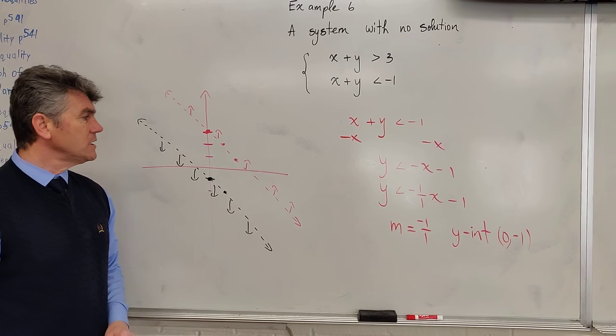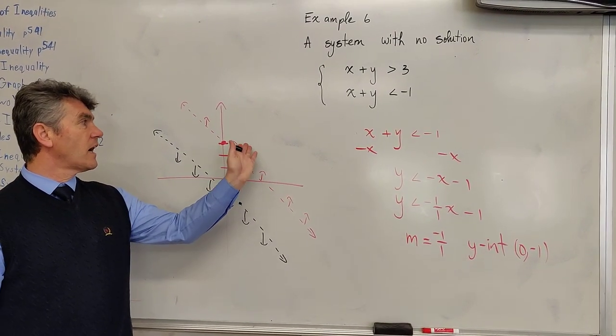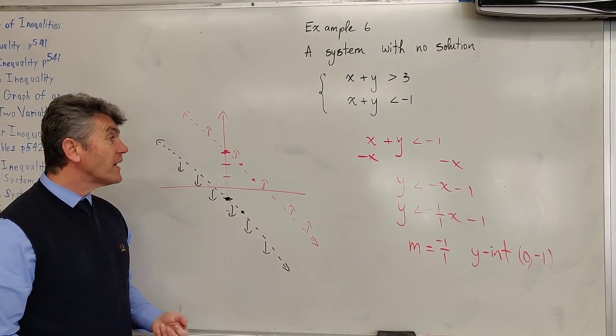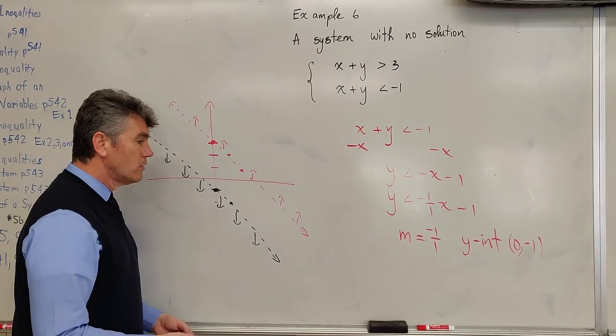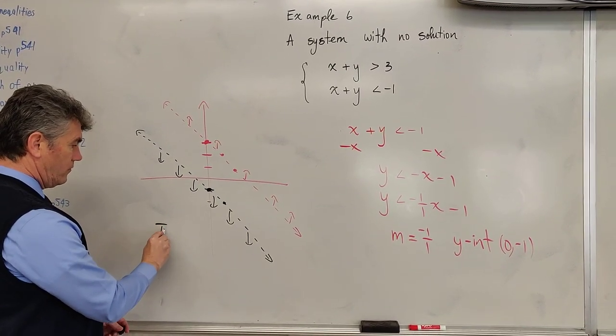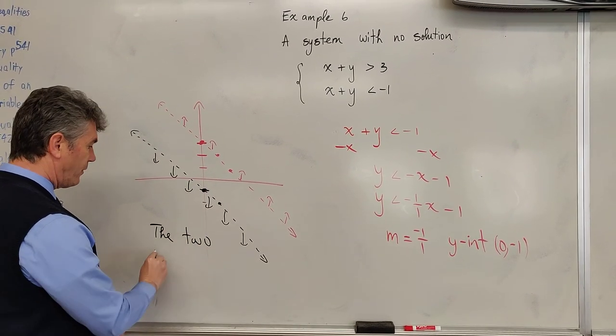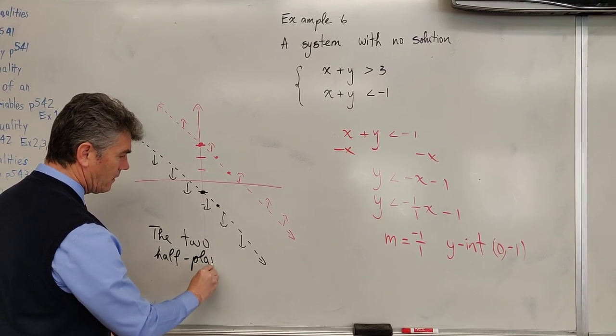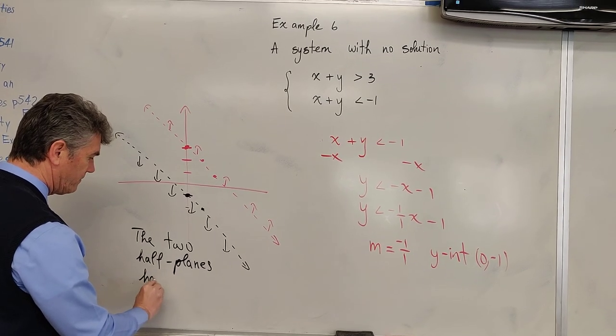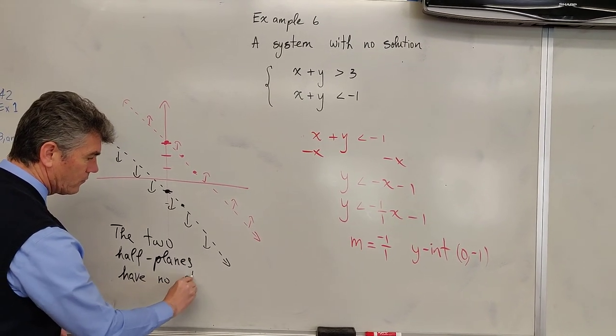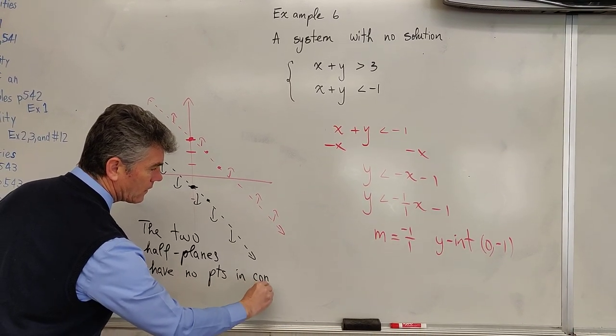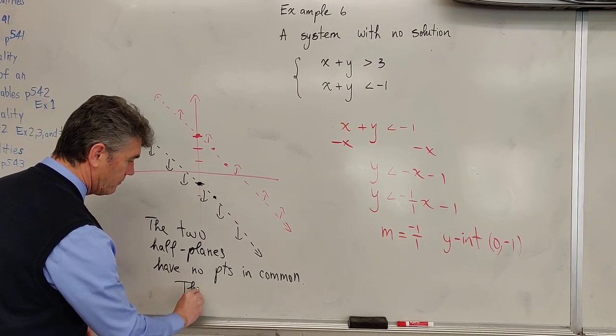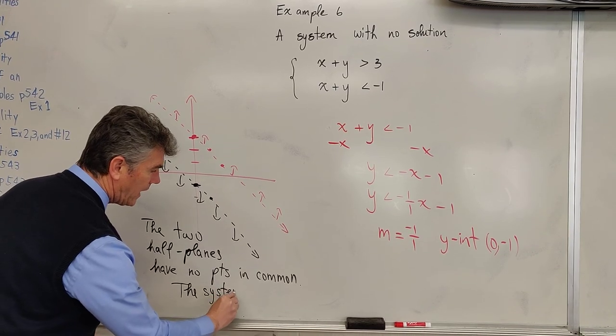What should you notice? You should notice that no point lies above the red line and below the black line. They don't have any points in common. So there is no solution. The two half-planes have no points in common. What does that mean? It means the system has no solution.